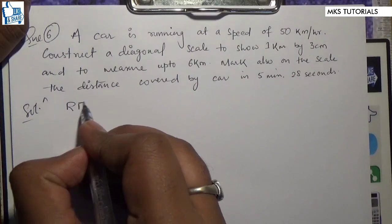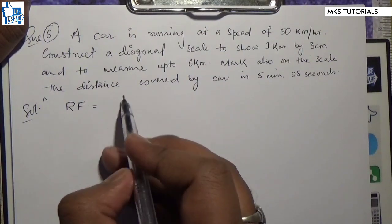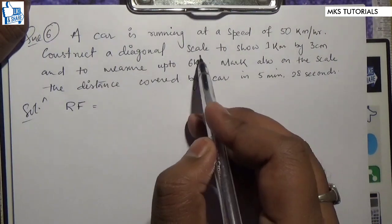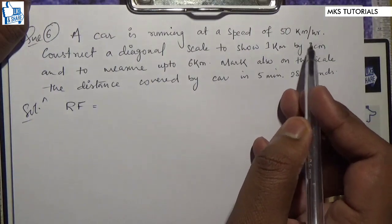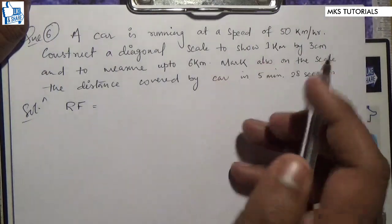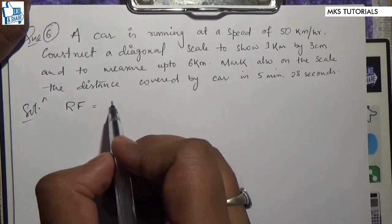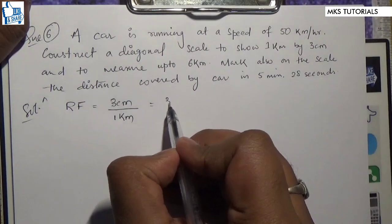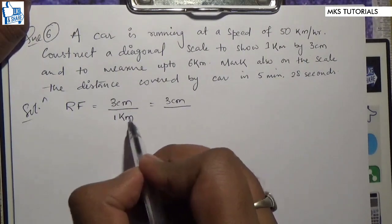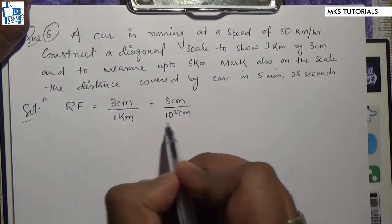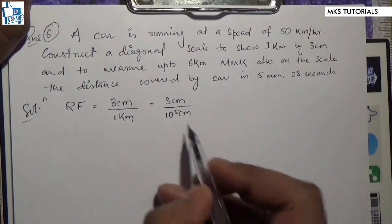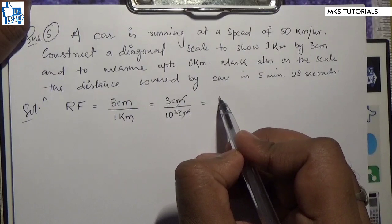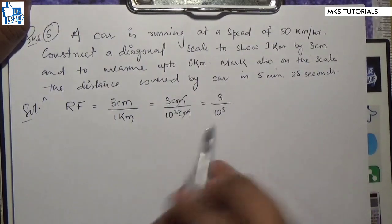RF is running at a speed of 50 km per hour. We're talking about 1 km per 1 cm scale. So we'll get up to 6 km.